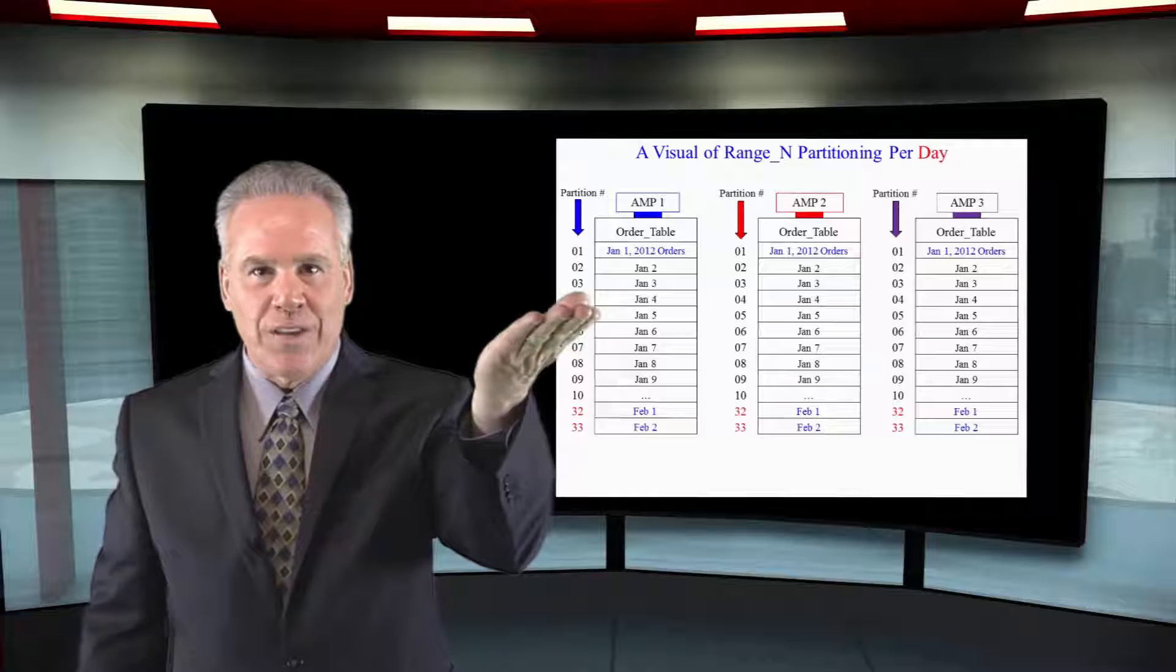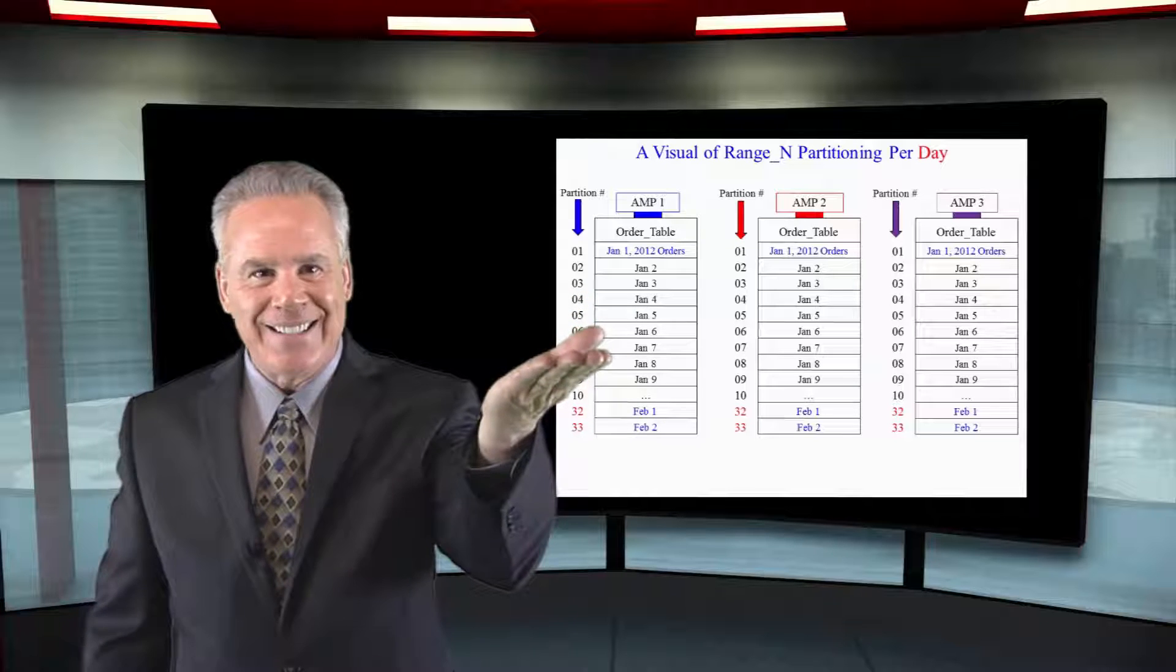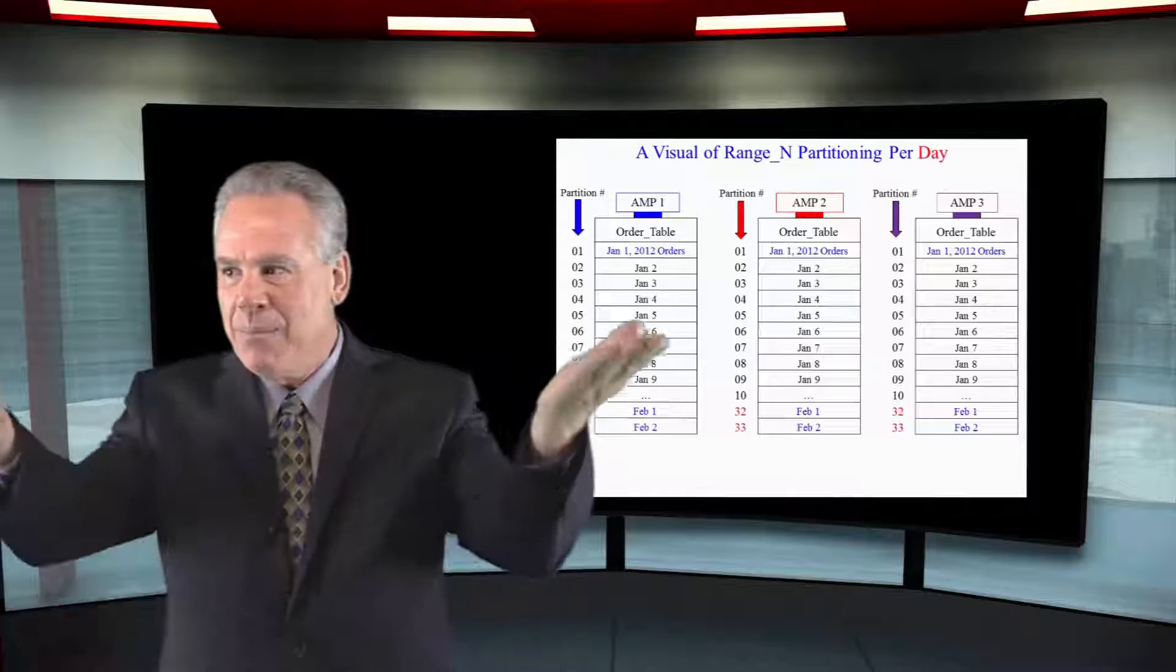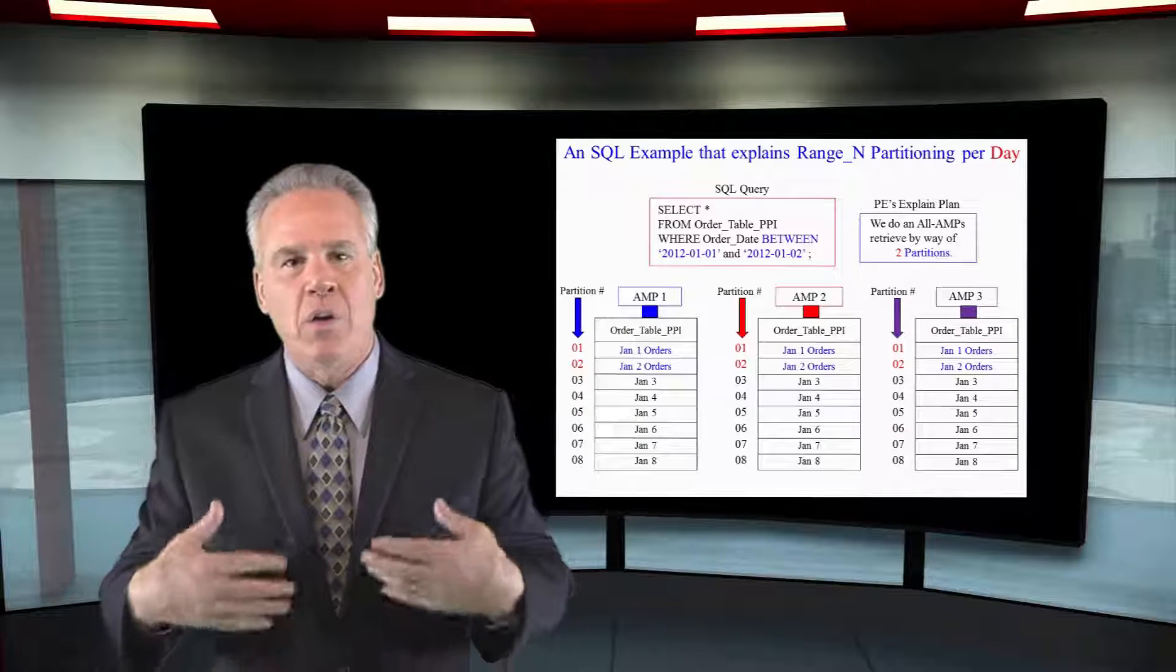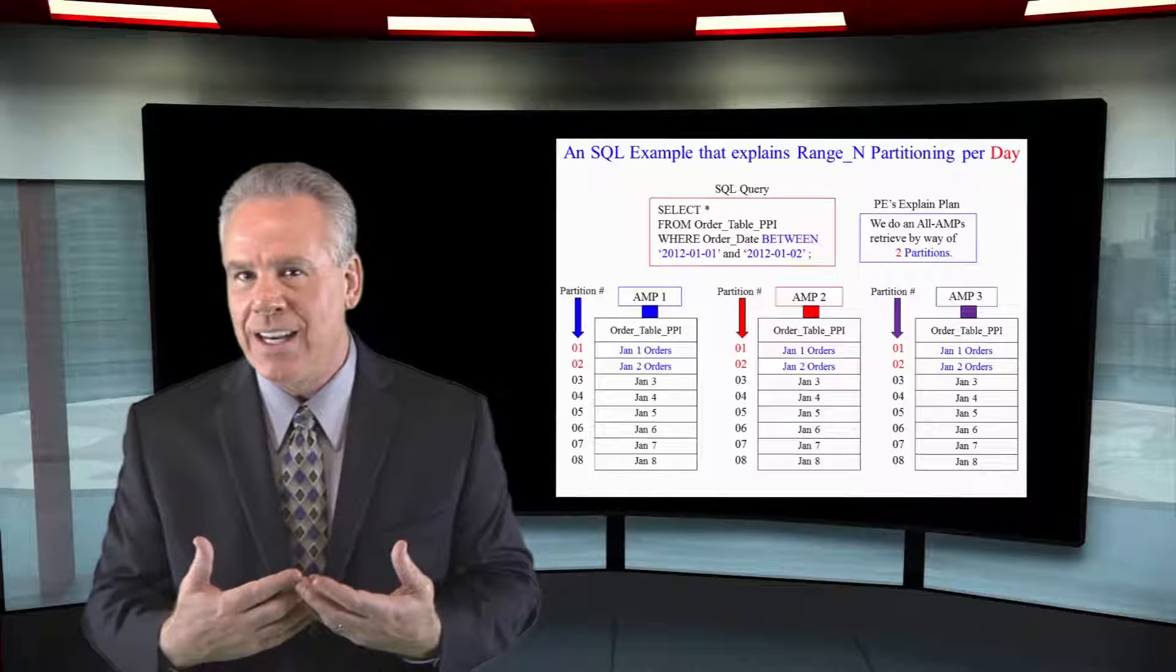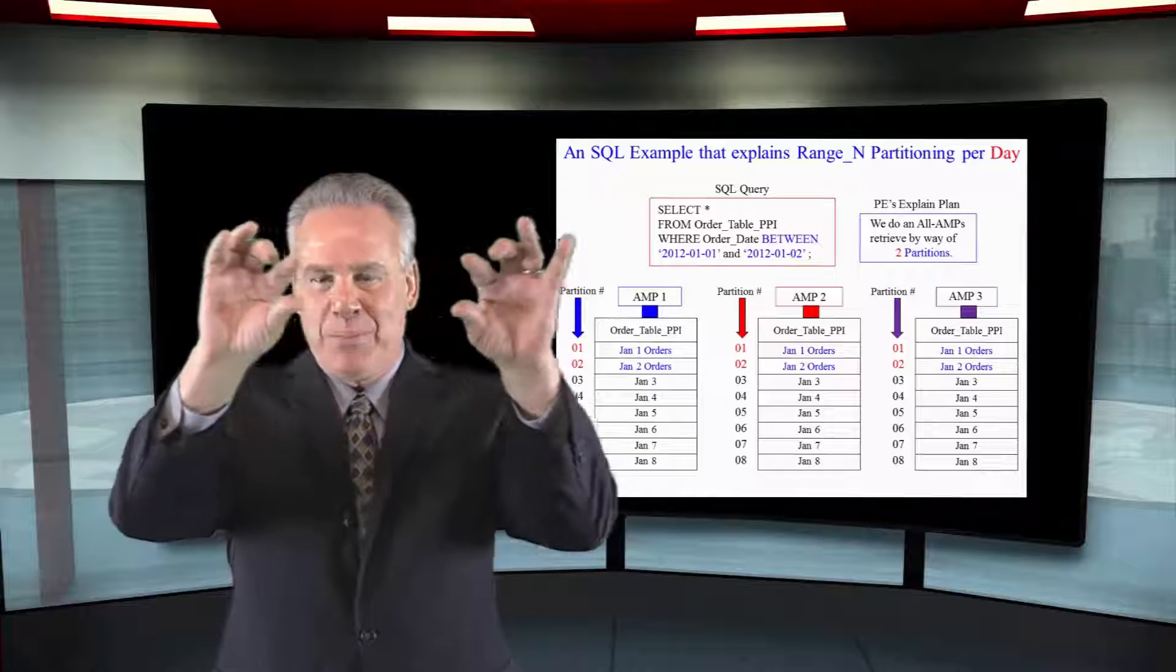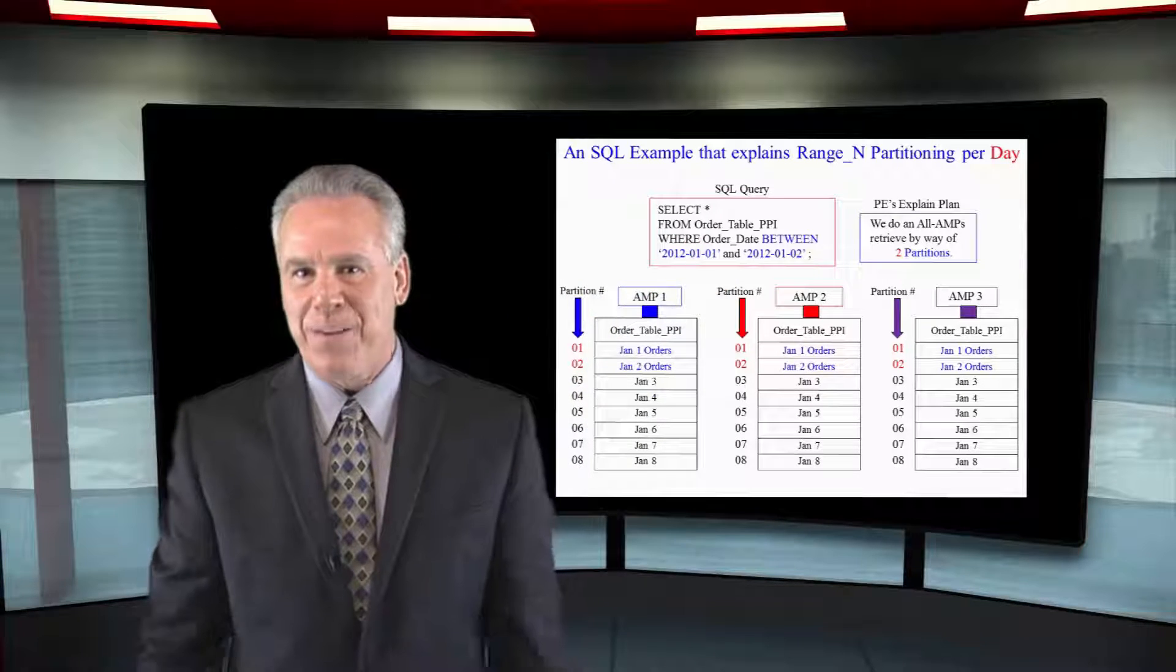I hold January 1st stuff at the top, January 2nd stuff after that. And if each AMP does this, and the query comes in and says I want to know all the orders between January 1st and January 2nd, each AMP just reads a small slice of data from the top.